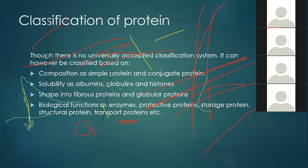Classification of protein: there is no universally acceptable classification system, but protein can be classified based on composition as either simple protein or conjugate protein; based on solubility as albumins, globulins, and histones; based on shape as fibrous protein and globular proteins; and based on biological function as enzymes, protective proteins, storage proteins, structural proteins, transport proteins, and others.